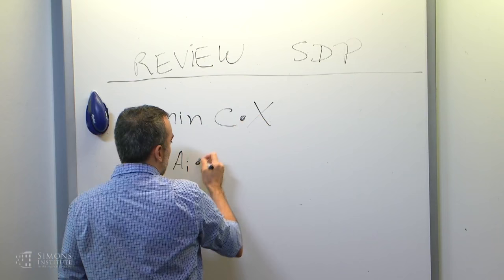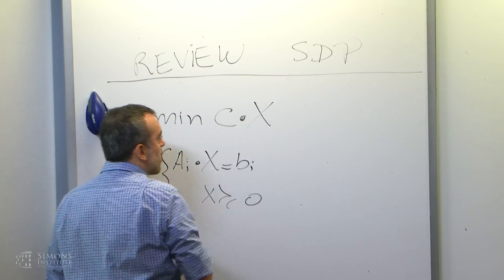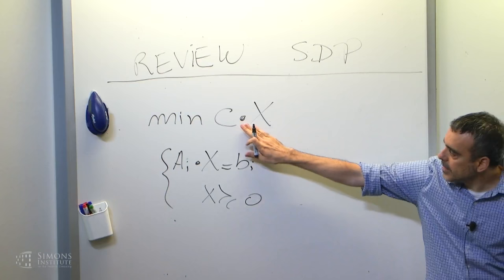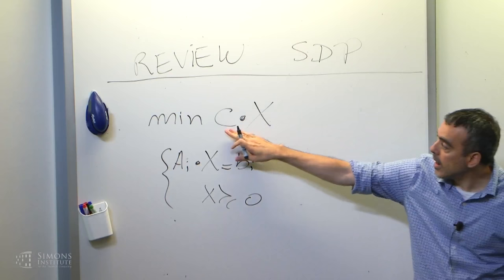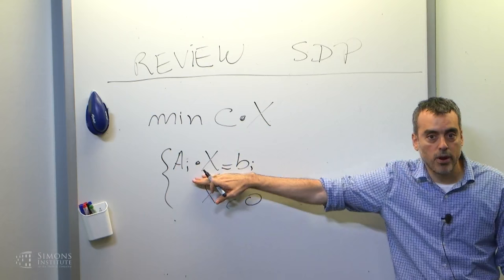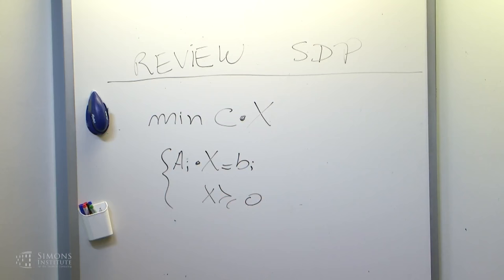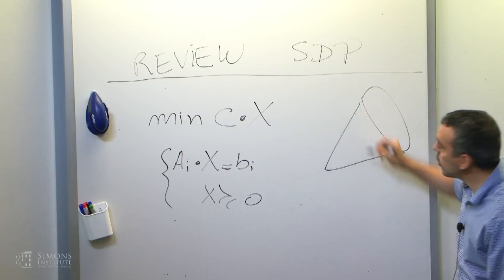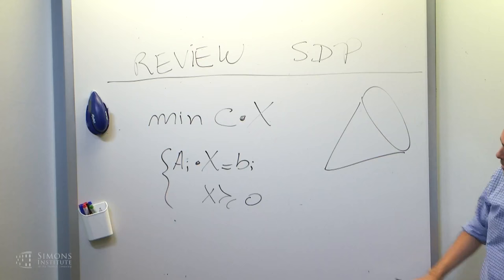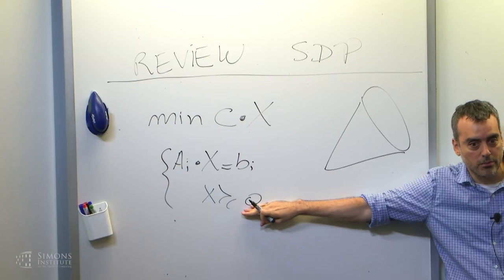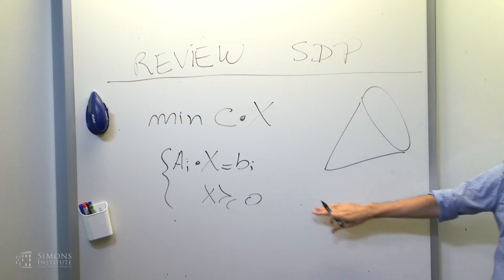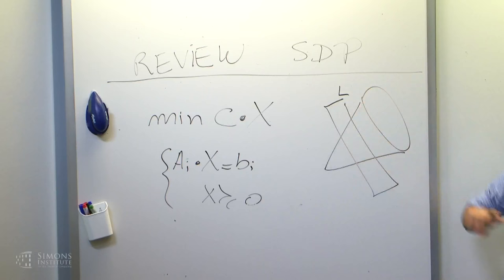He defined this very nice primal-dual form of what semidefinite programming looks like. The idea is that we're going to have a variable X where X is a symmetric matrix. This inner product expression I'm using is a trace of the product — really a linear function on X. I have affine constraints A sub i of X equals b sub i, and I have the positivity constraint: X being positive semidefinite. The geometry is the intersection of the cone of positive semidefinite matrices with an affine subspace L, and then I optimize a linear function over this intersection.